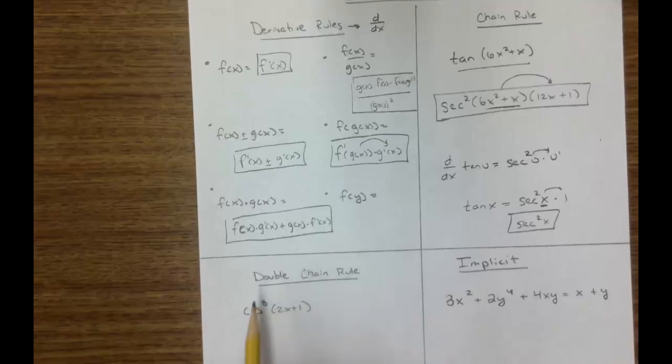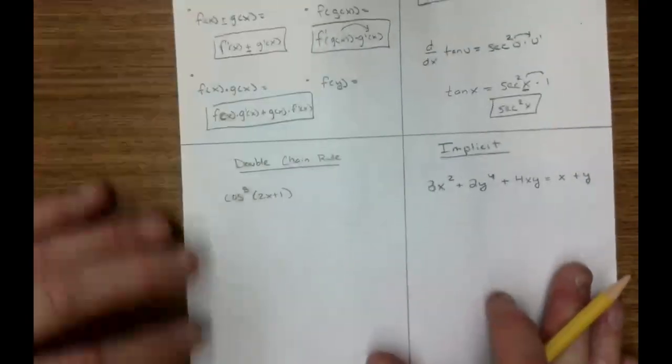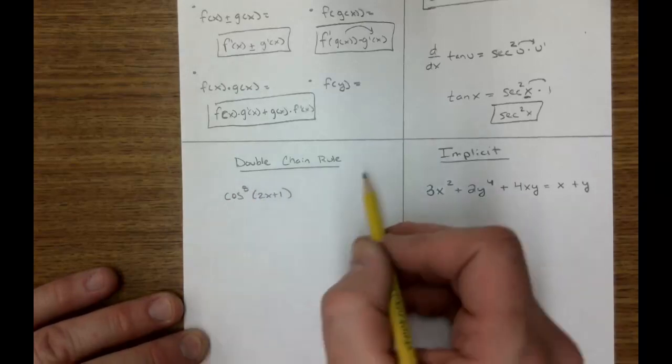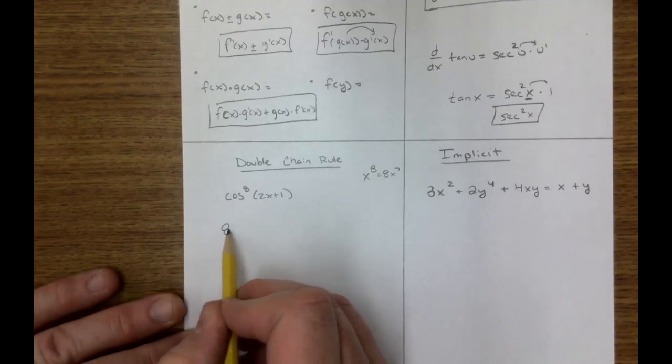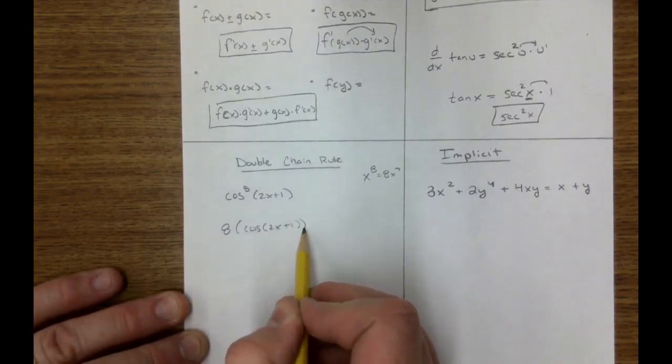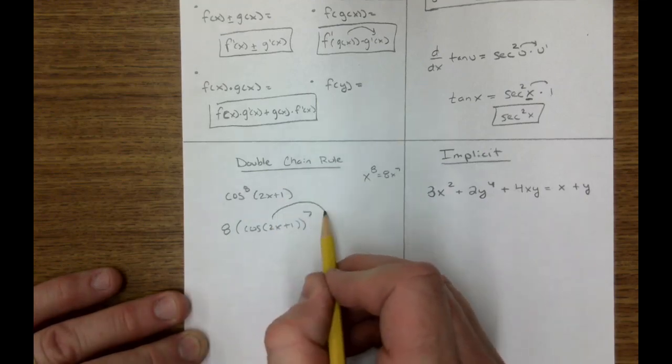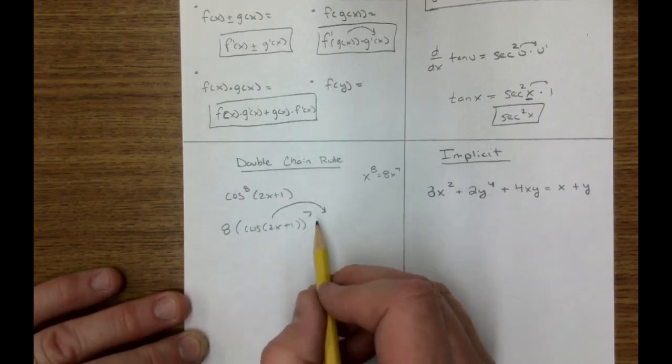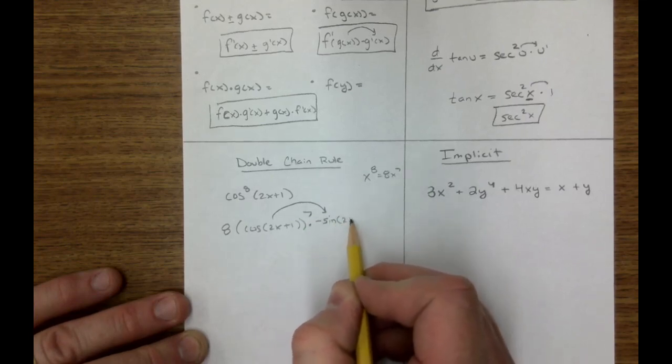Alright, let's look at a double chain rule problem. This is cosine to the 8th power. What I can do there is I bring down the 8, just like the power rule. That would be 8x to the 7th. So, this is 8 cosine of 2x plus 1 to the 7th. However, now I have to do the chain rule. So, the derivative of cosine is a negative sine, and there's that.